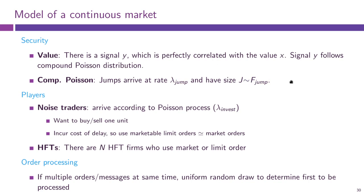There are two types of traders in the market. On one hand there are noise traders, who arrive according to a Poisson process with rate lambda_invest — they also arrive randomly over time and are not always in the market. Whenever a noise trader arrives they want to either buy or sell one unit of the asset, and they are random in what they want. The paper says they use marketable limit orders, but we can just assume they use market orders.